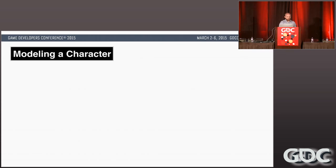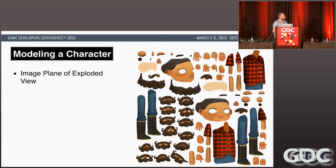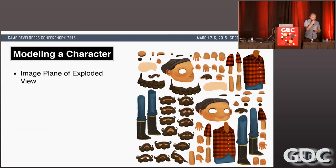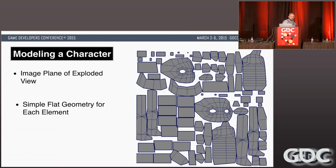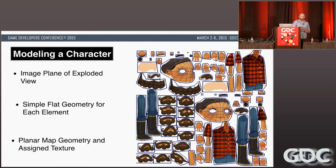Modeling a character with this system is super simple — it would take just a few hours. The 2D artists would create a character and break out any piece that needed to be on its own plane into an exploded view. We'd bring that into Maya, build planes around that view, and UV map the textures onto those planes. Most of the work was in all the painting; actually building the model didn't take very long.